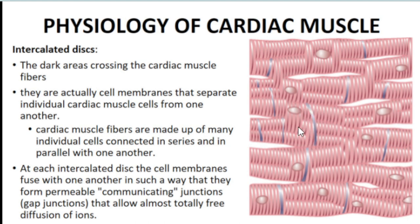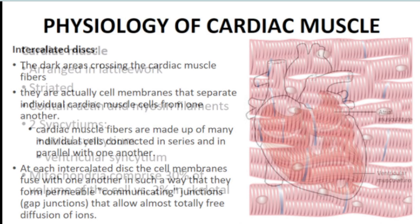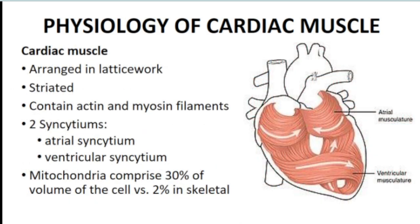Because of these gap junctions, ions can pass through freely, which is why the fibers are connected in series or parallel with one another. This allows all parts of the cardiac muscle to beat at the same time and in a certain rhythm. The intercalated discs allow the spread of action potentials throughout the cardiac muscles. There is also a spiral arrangement of cardiac muscles, which we call the lattice work.